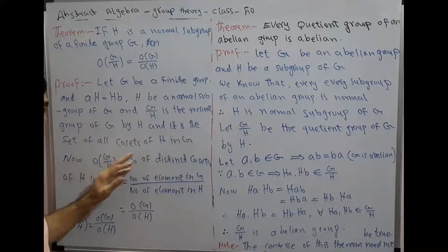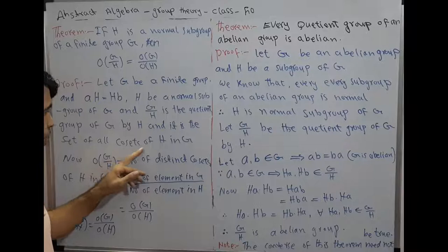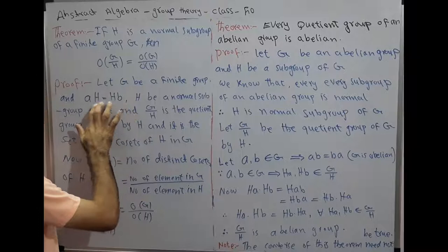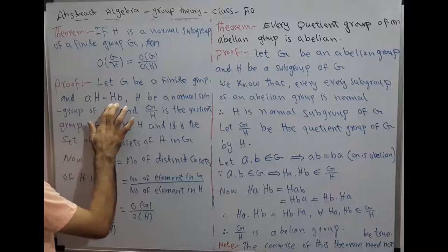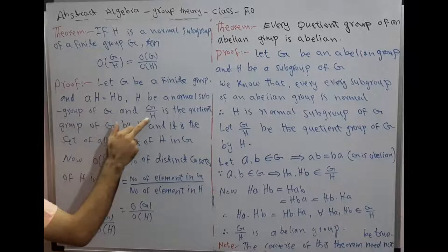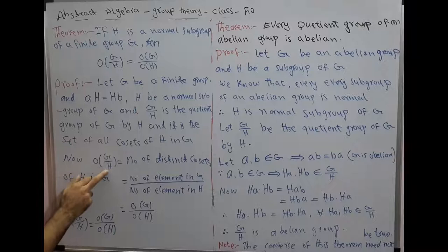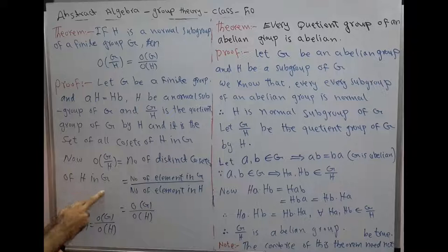We analyze the theorem: let G be a finite group and H be a normal subgroup of G, where the left cosets equal the right cosets since H is normal. G by H is the quotient group and it is the set of all cosets of H in G. The order of G by H is equal to the number of distinct cosets of H in G.